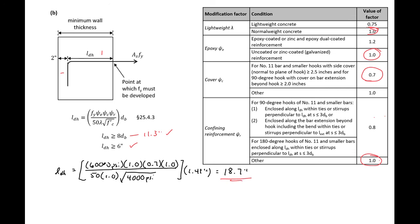We can then figure out our minimum wall thickness, which is going to be equal to our 18.7, our development length requirement, plus 2 inches back cover. So we can see that hooking our bars reduces our development length requirement by over 30 inches. So we can save substantial length using a hooked bar.